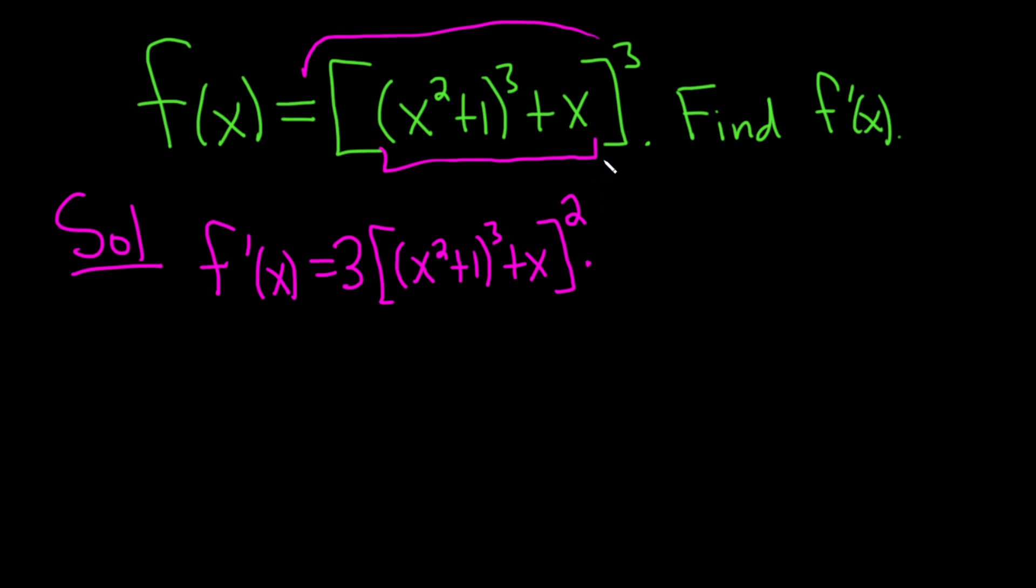So times, so again, so far all we've done is we've taken the derivative of this outside function, we brought down the 3, left the inside untouched, subtract 1 from the exponent. Then you go to the inside function, that's what you do next. So times the derivative of the inside function. So in this case, our inside function is this here, just this piece here. So we're going to differentiate that.